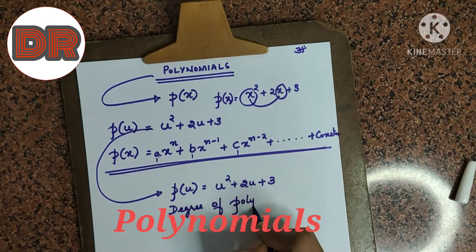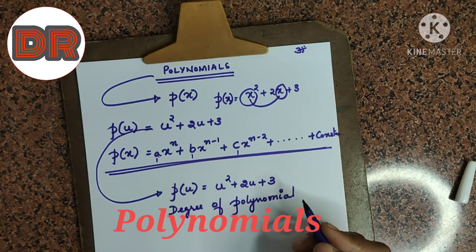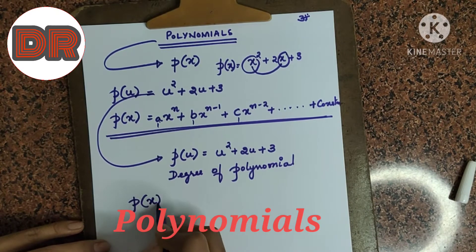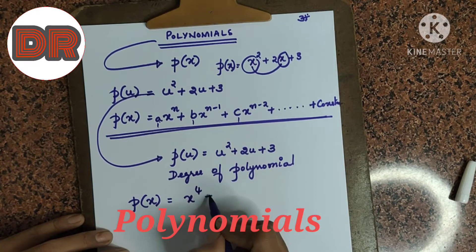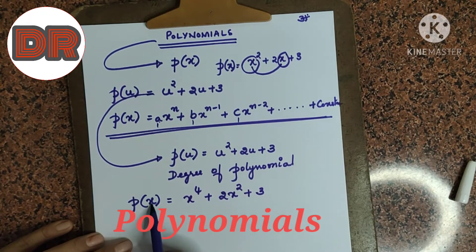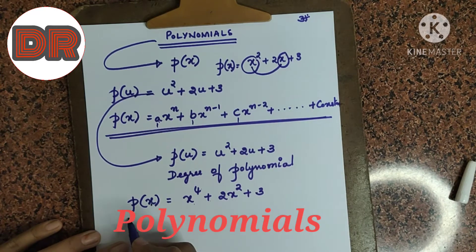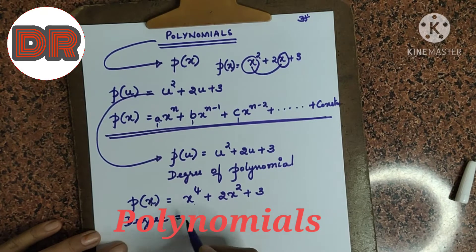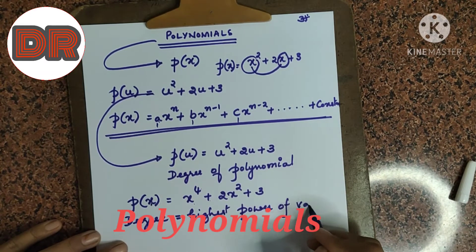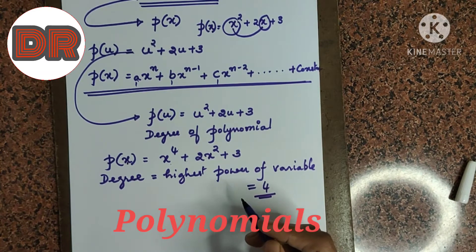So, this is known as the degree of polynomial. What is the degree of polynomial? The degree of polynomial is the highest power of the variable in the polynomial. If I take one more example, where I take variable as x and write x to the power 4 plus 2x square plus 3, this polynomial p of x equals x to the power 4 plus 2x square plus 3. What is the degree? The degree is the highest power of the variable, which is 4. So, the degree is 4.